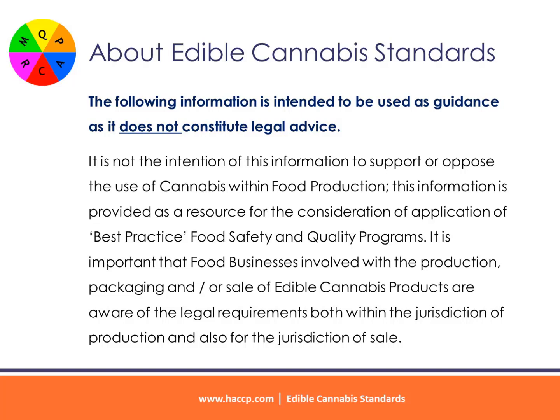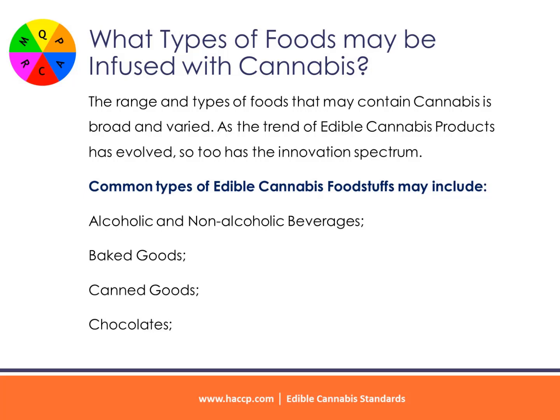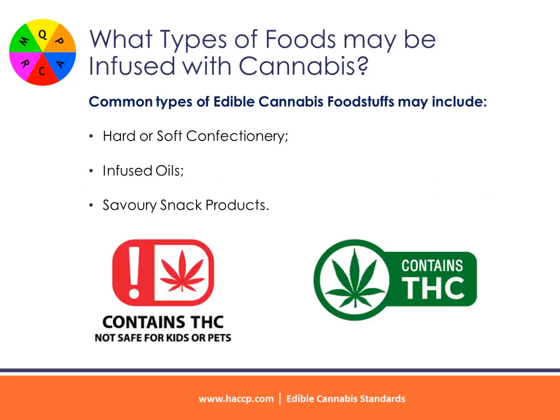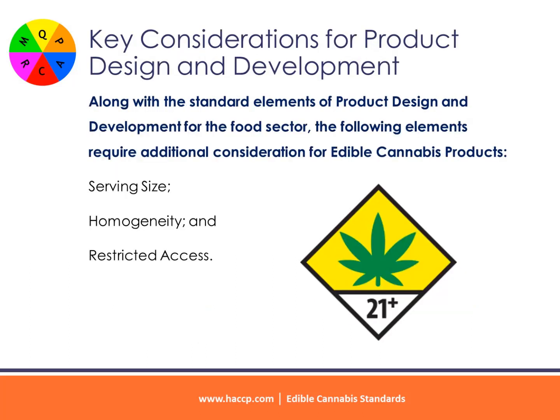It is important that food businesses involved with the production, packaging, and/or sale of edible cannabis products are aware of the legal requirements both within the jurisdiction of production and also for the jurisdiction of sale. The range and types of foods that may contain cannabis is broad and varied. Common types of edible cannabis foodstuffs may include alcoholic and non-alcoholic beverages, baked goods, canned goods, chocolates, hard or soft confectionery, infused oils, and savory snack products.